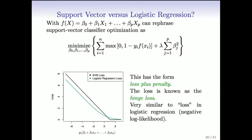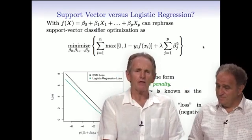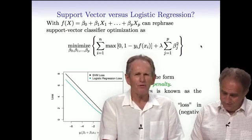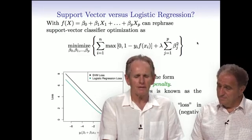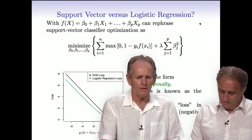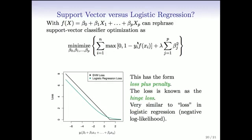We're near the end of this section. We'll end up by comparing support vector machines to logistic regression. Logistic regression did solve classification problems by modeling the probabilities of the classes, where support vector machines were optimizing, going directly for the decision boundary. They seem very different. It turns out they're not as different as one might think. If we write the linear function in this form, as we've done before, it turns out we can rephrase the optimization problem for the support vector classifier in the following form. There's a loss function between y and f of x summed over the observations. This is similar to but not the same as a log likelihood.